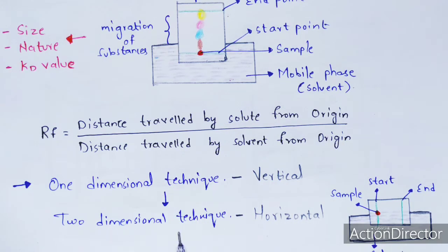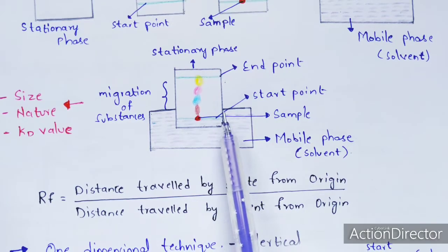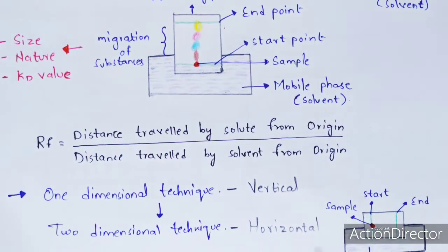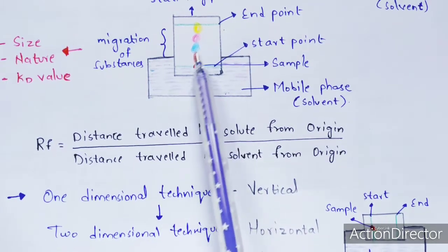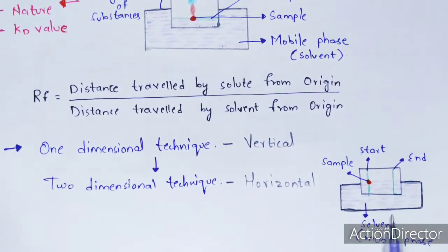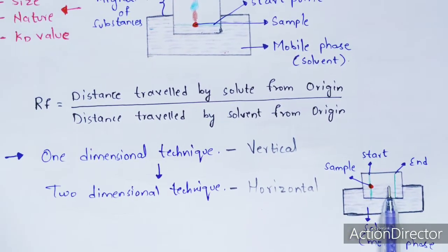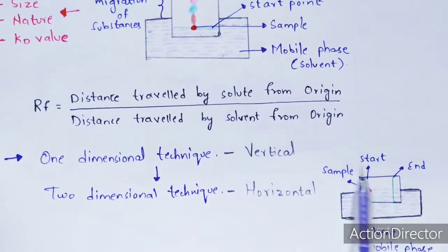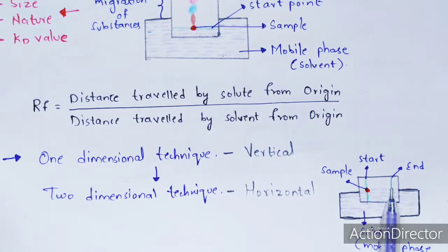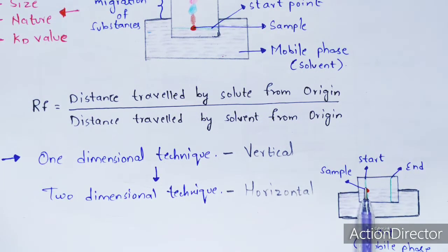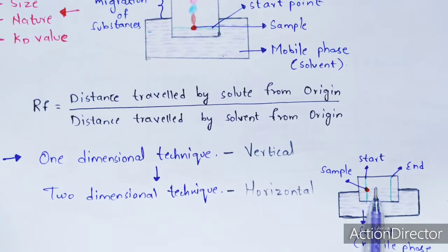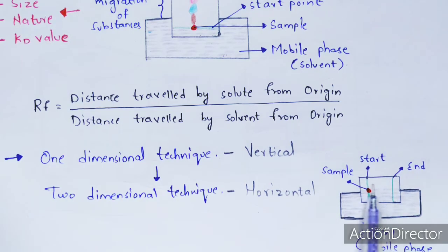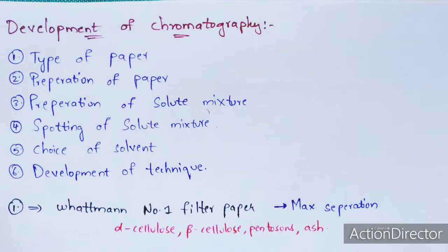The main difference between one-dimensional and two-dimensional techniques is the orientation of the stationary phase. In one-dimensional technique, the stationary phase is in a vertical position. In the two-dimensional technique, the stationary phase (paper) is tilted to the right side into a horizontal position, and separation of molecules occurs towards the right side.